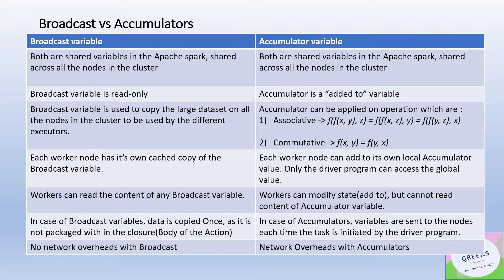Both are shared variables provided in Apache Spark. Both are meant to share or aggregate information across all the nodes in the cluster, but there is a difference in their behavior. A broadcast variable is a read-only variable, while an accumulator is an add-to variable — as the name suggests, you can accumulate values across all the nodes.